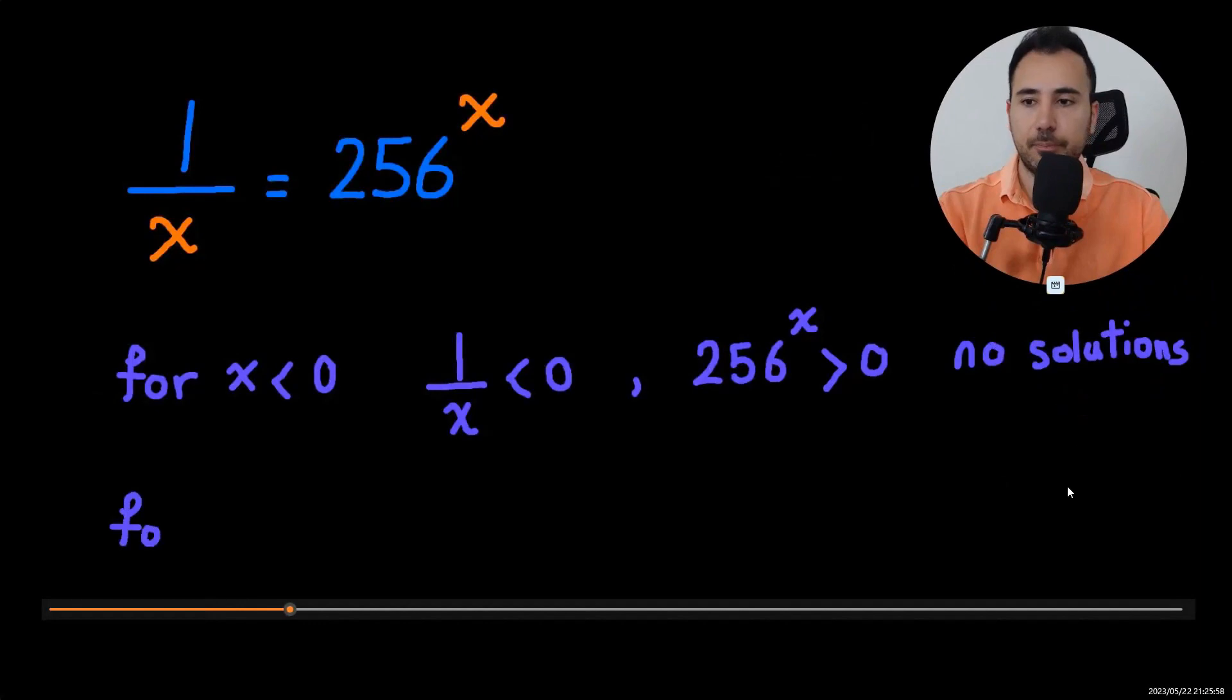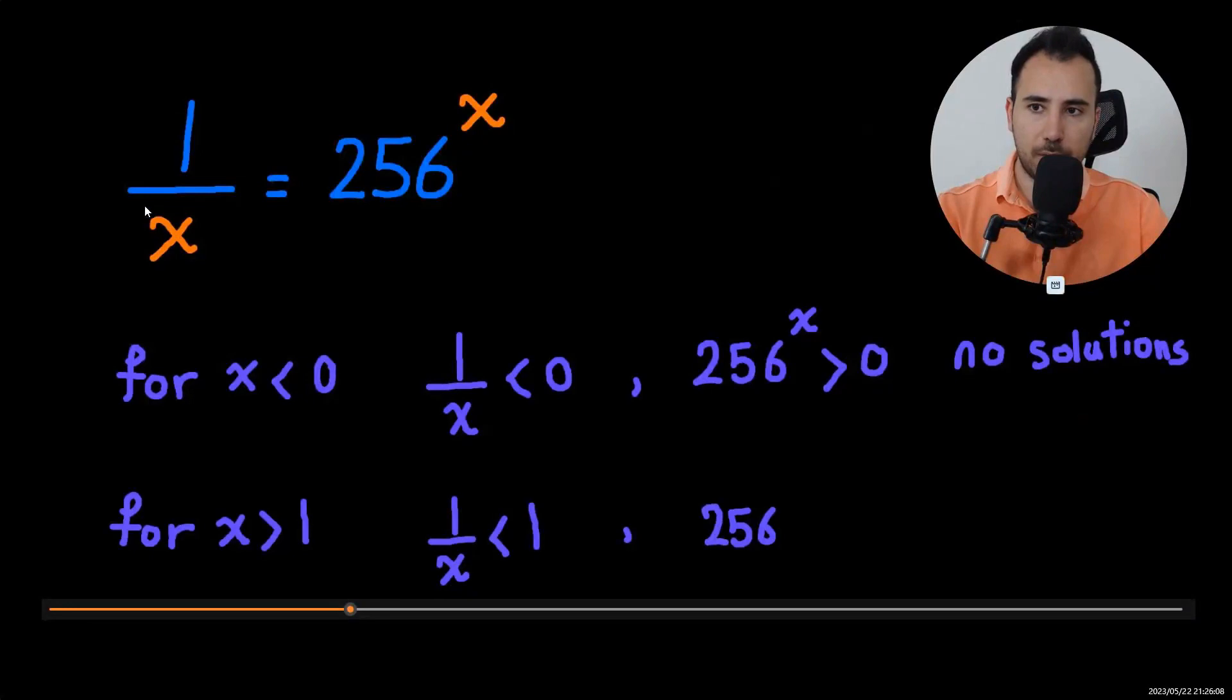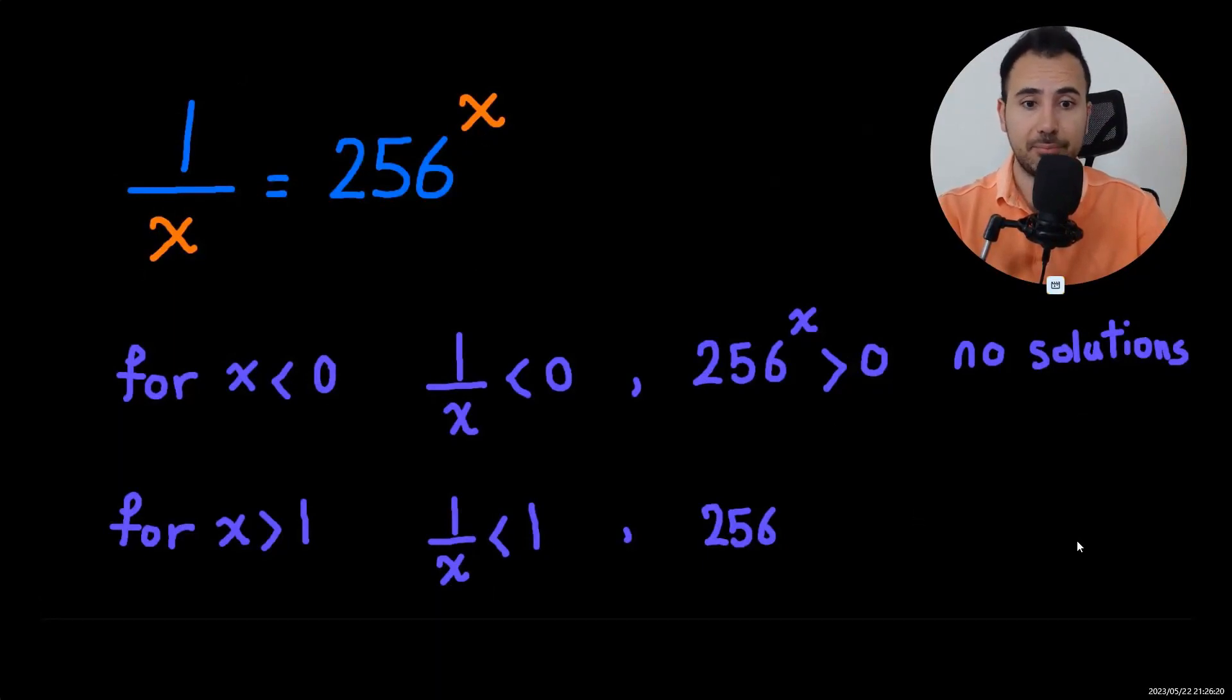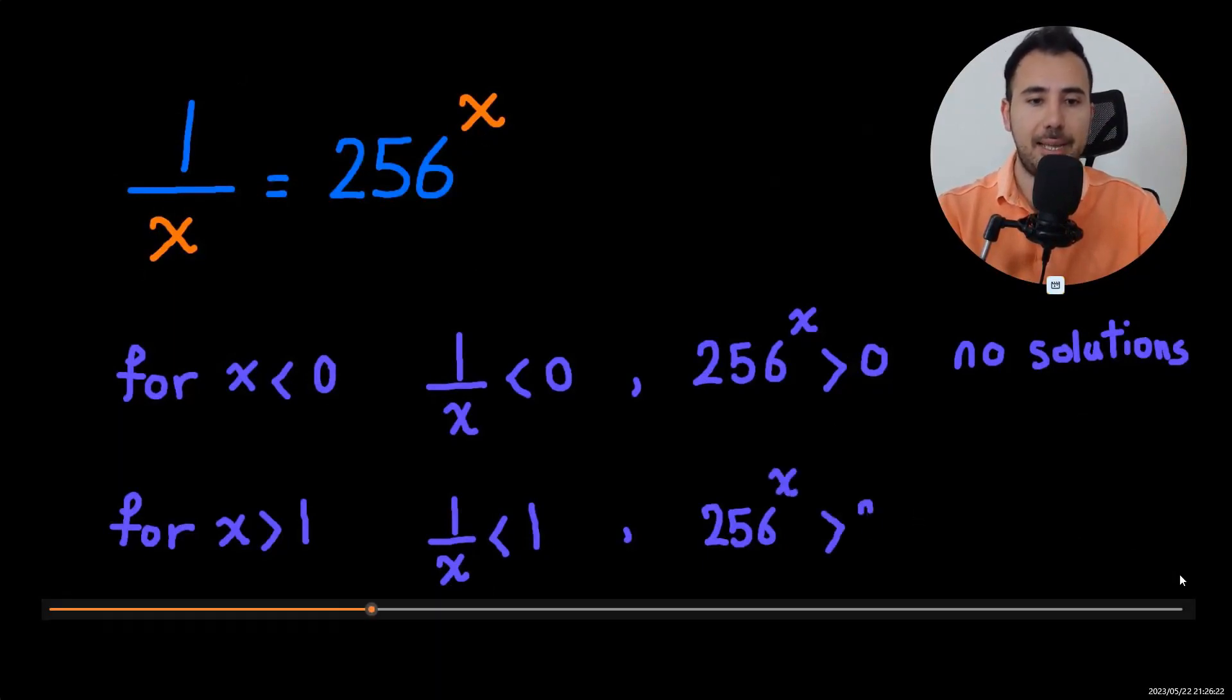Okay, let's see it here. Now, for x's that are more than 1, 1 divided by something more than 1, so 1 over x will be less than 1. But 256 to power of x's more than 1 will be even larger. So again, no solutions.